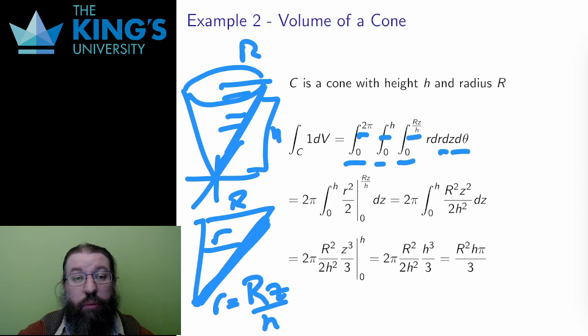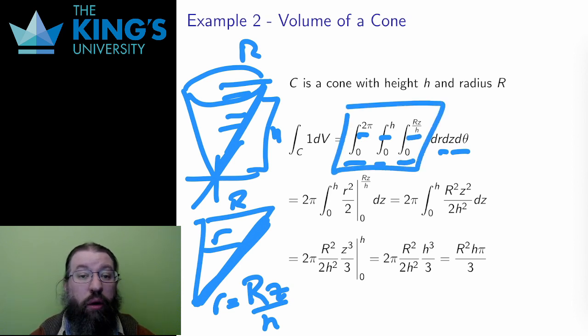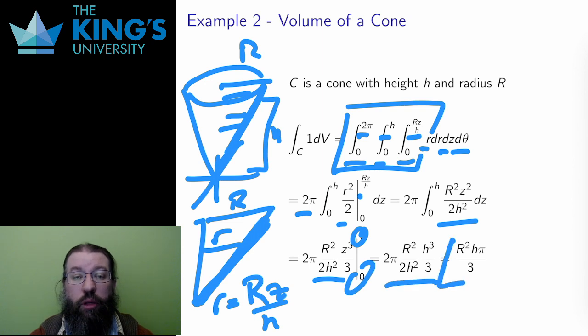The function for volume is just 1, and I have to remember the r for the Jacobian for cylindrical coordinates. Then I do the integral. The theta integral is separable, and its value is just 2π. The r integral has to happen inside the z integral, since the r bounds depend on z. I do that integral and replace on the bounds to get this z integral. Then I finish by doing the z integral, evaluating on the bounds, and finally getting the familiar formula for the volume of a cone.